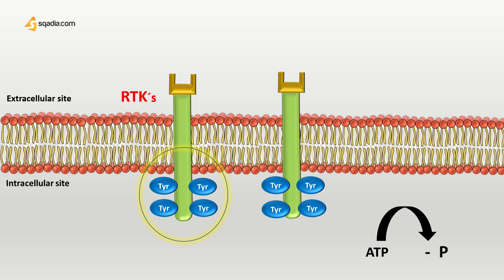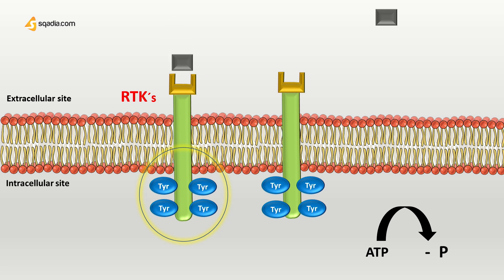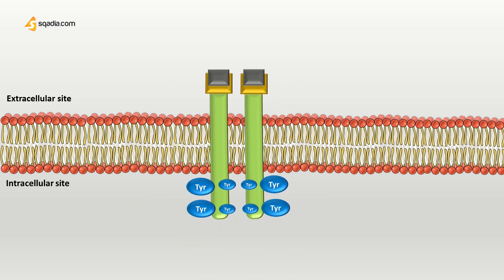These receptor tyrosine kinases always occur in pairs, probably found in nearby places. When the signaling molecule binds to an RTK, it causes neighboring RTKs to associate with each other, forming a cross-linked dimer.